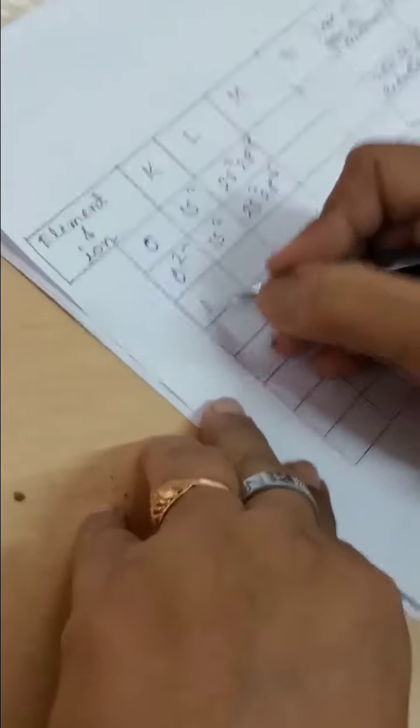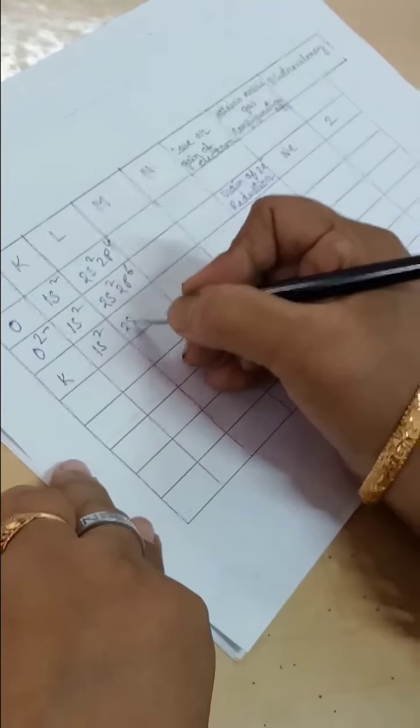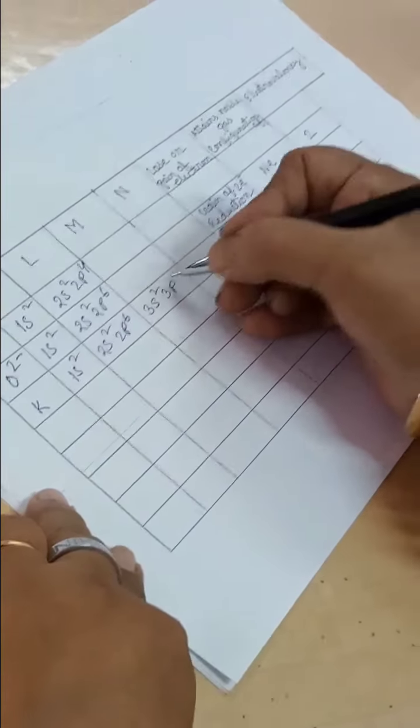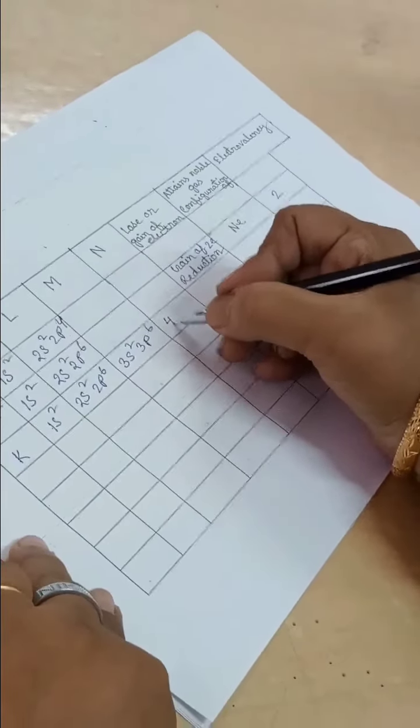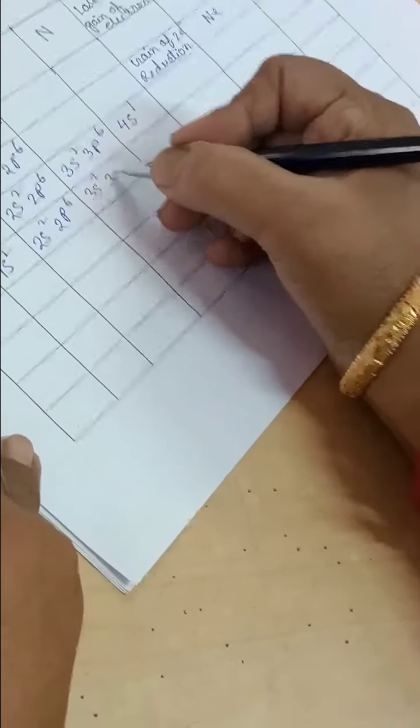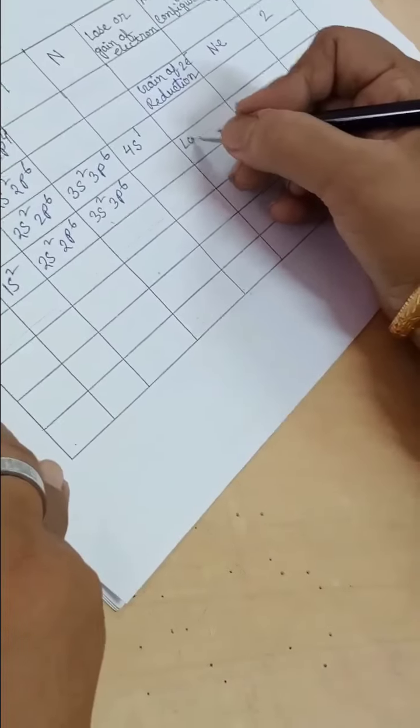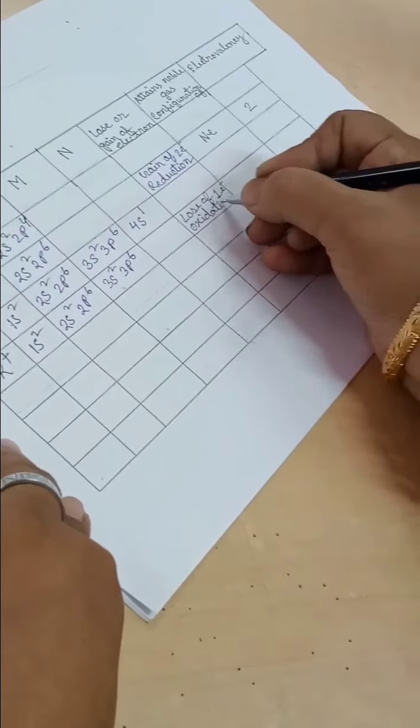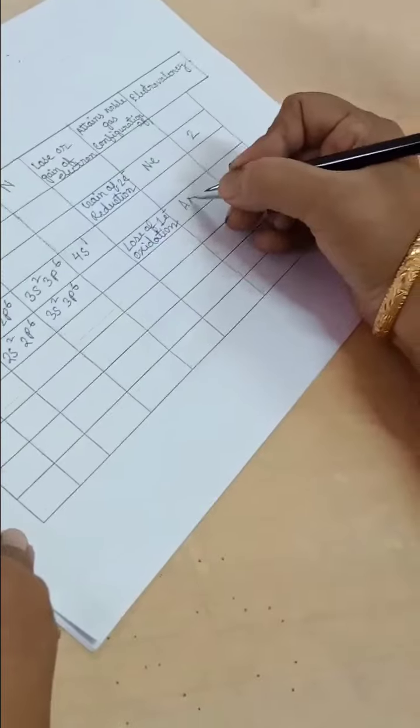Electrovalency: 2. Potassium: 1s2, 2s2, 2p6, 3s2, 3p6, 4s1. Potassium+: 1s2, 2s2, 2p6, 3s2, 3p6. Loss of 1 electron, oxidation, attains argon configuration, electrovalency 1.